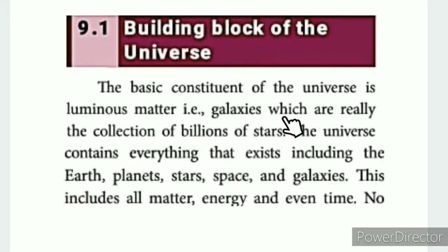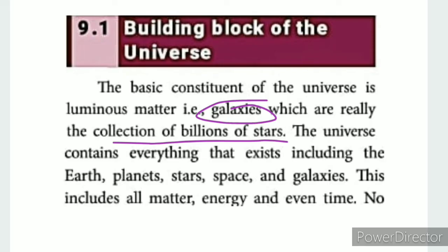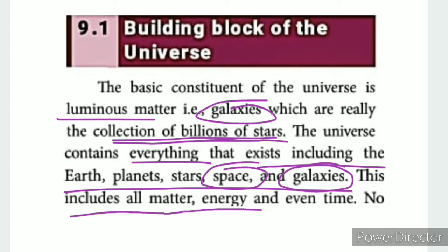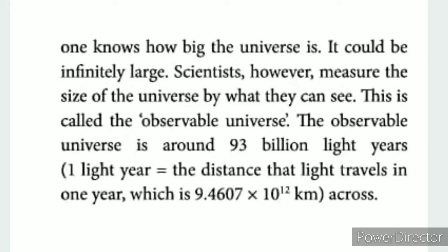The building block of the universe: the basic constituent of the universe is luminous matter — that is, galaxies — which are really the collection of billions of stars. Everything exists including the earth, planets, stars, space, and galaxies. This includes all matter, energy, and even time. No one knows how big the universe is; it would be infinitely large.